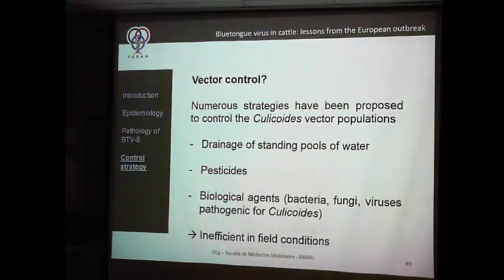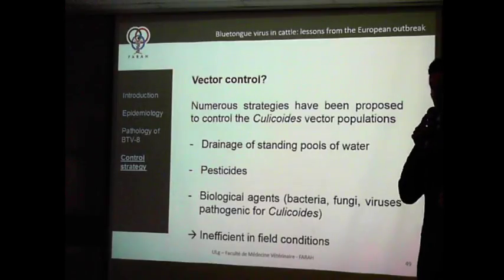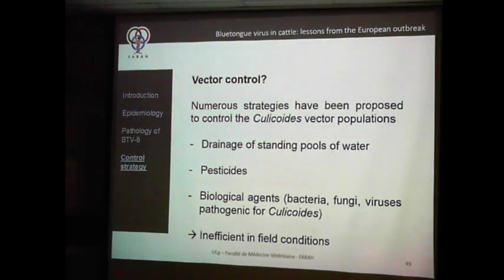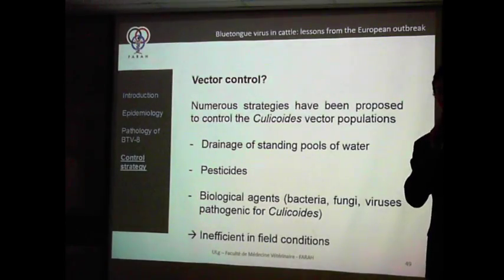Now, what about control strategies? Vector control has been tried by several approaches. Drainage of standing pools of water is important because Culicoides larvae can develop there and amplify the population — it is always better to eliminate standing water from farms, though not always easy. Pesticides were used, as well as biological agents like bacteria, fungi, or viruses pathogenic for Culicoides. All of this works under laboratory conditions, but not in the field — it is simply not feasible.